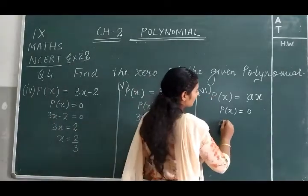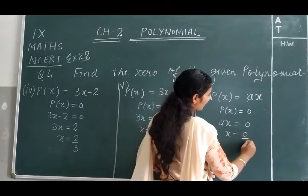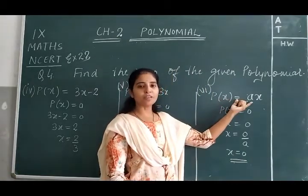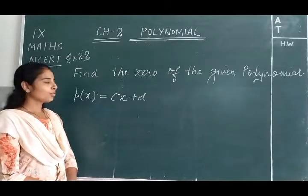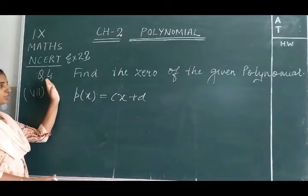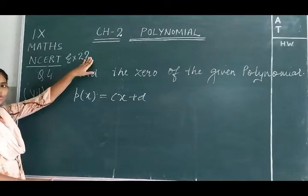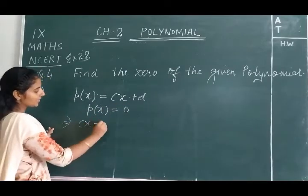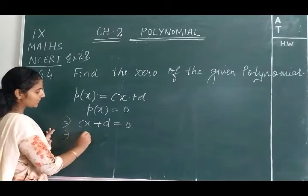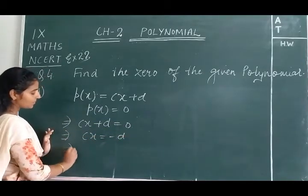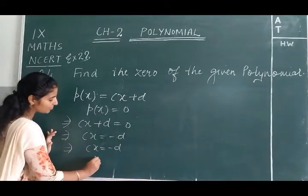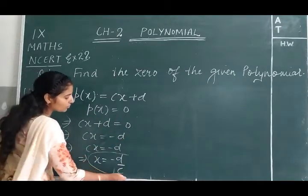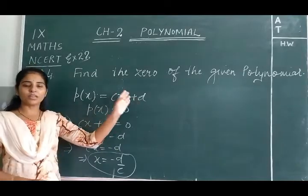For the sixth part, p(x) = cx + d: setting p(x) = 0 gives cx + d = 0, so cx = -d, therefore x = -d/c. This means x = -d/c is the zero of the given polynomial.